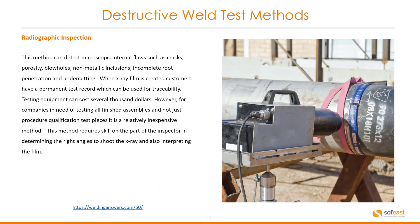Radiographic inspection can detect microscopic internal flaws such as cracks, porosity, blowholes, non-metallic inclusions, incomplete root penetration, and undercutting. When x-ray film is created, customers have a permanent test record which can be used for traceability. Testing equipment can cost several thousand dollars; however, for companies needing to test all finished assemblies and not just procedure qualification test pieces, it is a relatively inexpensive method. This method requires skill on the part of the inspector in determining the right angle to shoot the x-ray and also in interpreting the film.